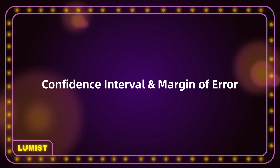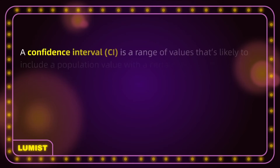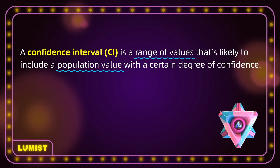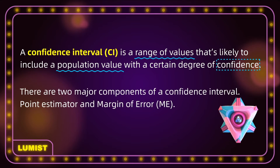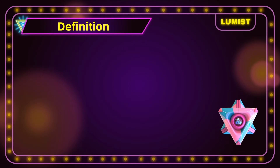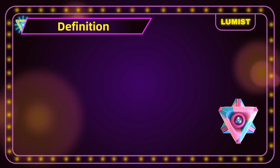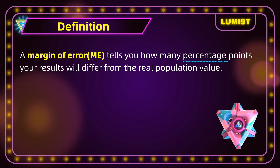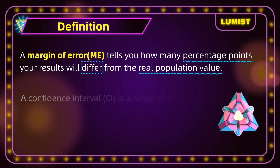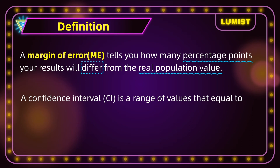Now we can go on to talk about confidence intervals. A confidence interval is a range of values that's likely to include a population value with a certain degree of confidence. There are two major components of a confidence interval: the point estimator and the margin of error. A margin of error tells you how many percentage points your results will differ from the real population value. A confidence interval equals the point estimate plus or minus the margin of error.